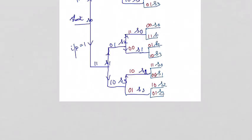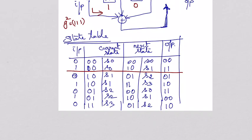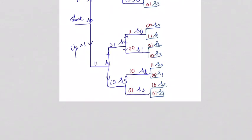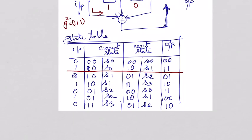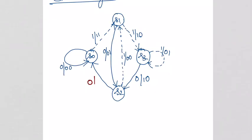Let us look at the previous pages to find the corresponding output. From S2, when you apply 1, it goes to S1 with output 00. From S2, when you apply 0, it goes to S0 with the output 11. So we need to write here: with output 11 it goes to S0. You need to complete this state diagram.